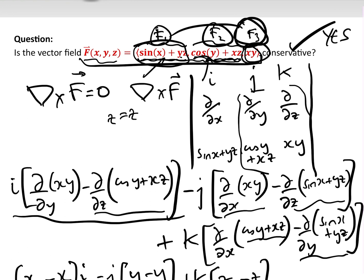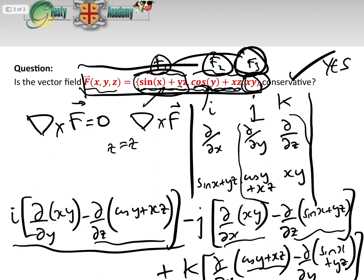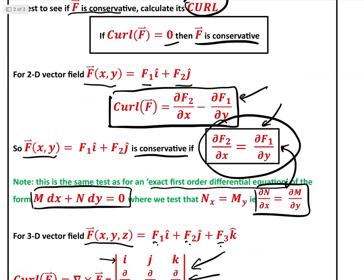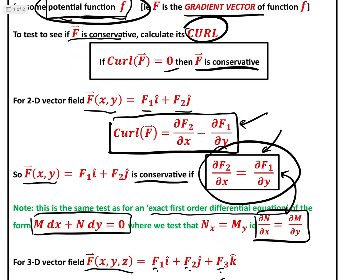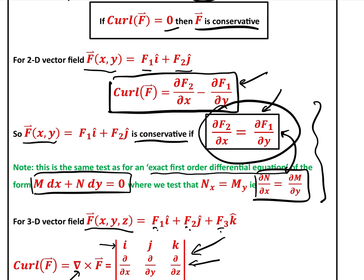This is part one of a two-part video. In the next part, having established that the vector field is conservative, we'll work out what the potential function is — i.e. how do we find the function f such that its gradient equals the vector field. We've already covered how to find the potential function in exact first-order differential equations, so the video in the description covers the 2D case. The next video will show how to do it for three-dimensional vectors.